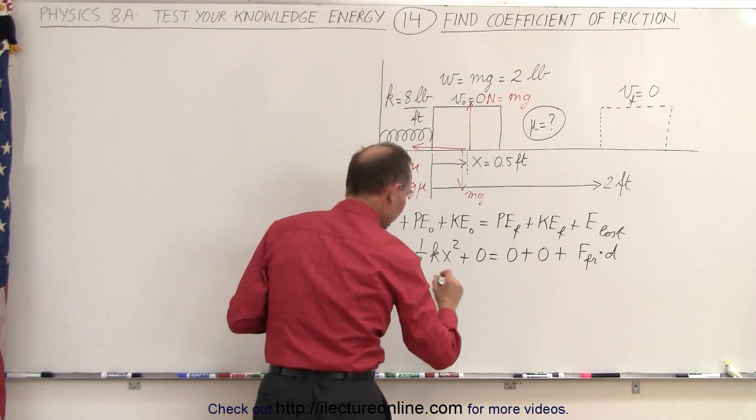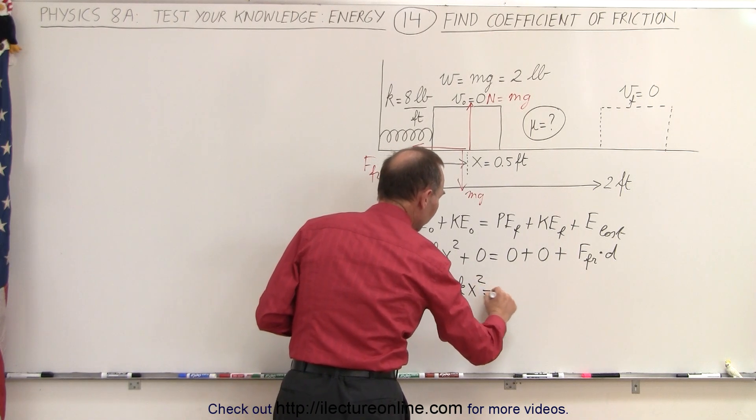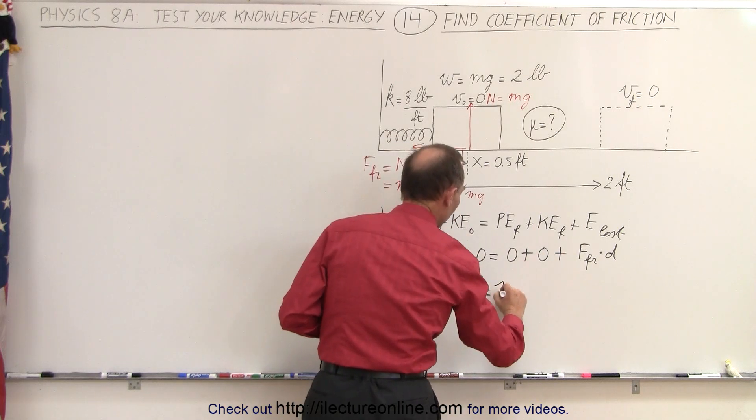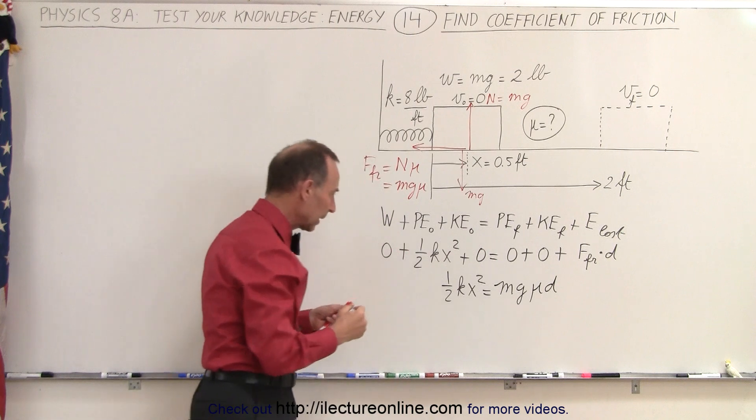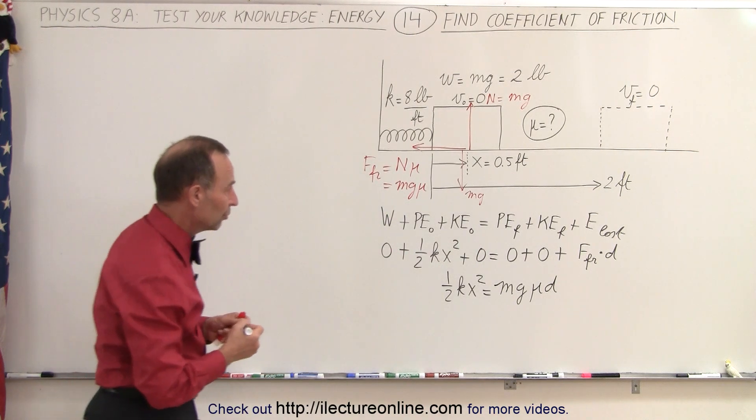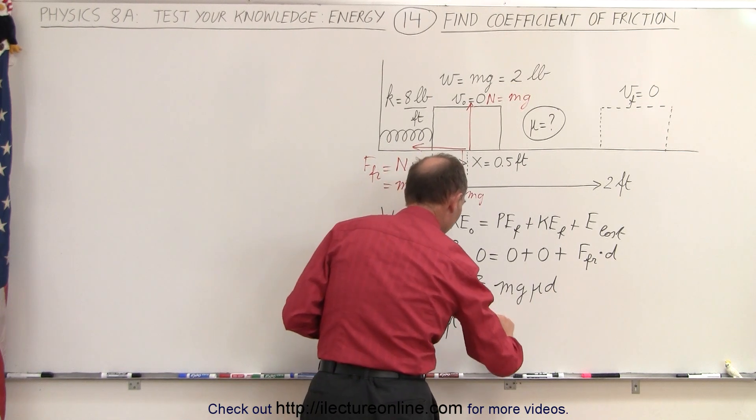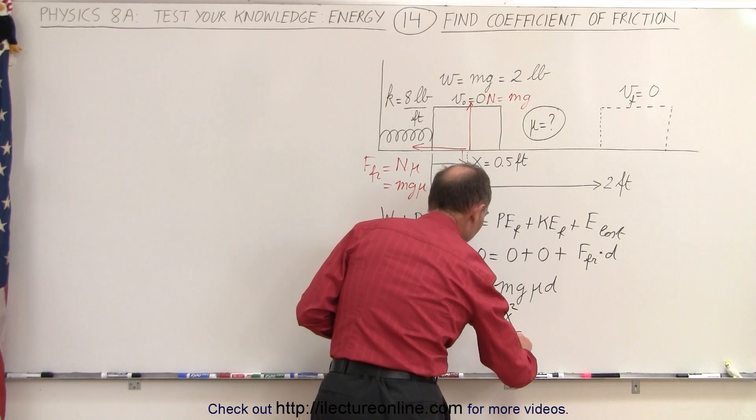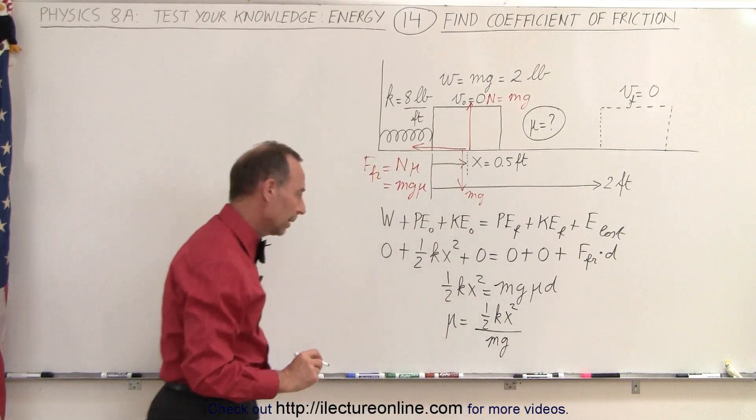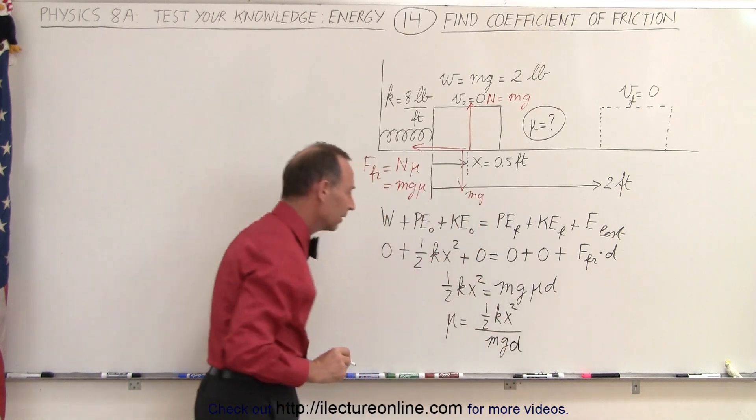That means that this can now be written as, on the left side, one half kx squared is equal to the friction force, which is mg mu times d. And yes, we are looking for mu, which means that we can say that mu is equal to one half kx squared divided by m times g and times d. You can't forget the d there. All right.